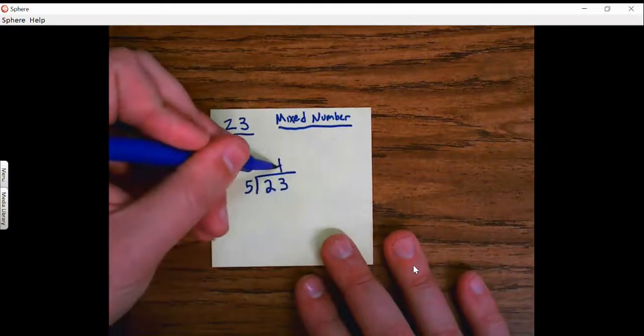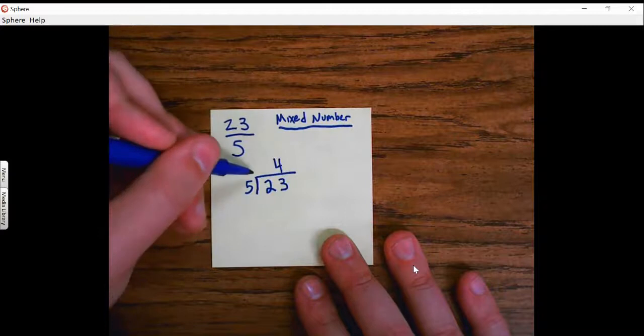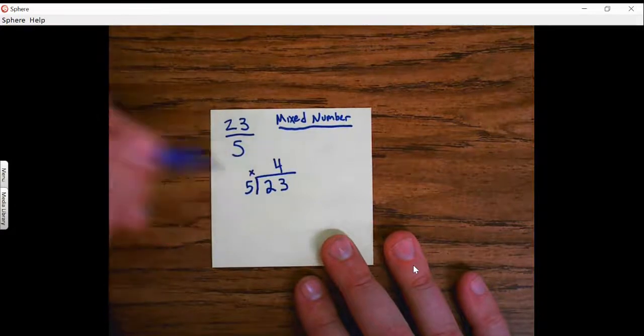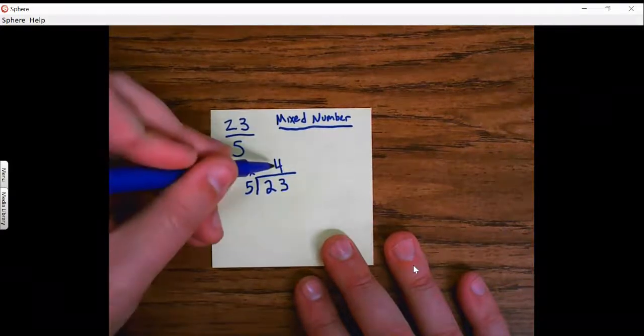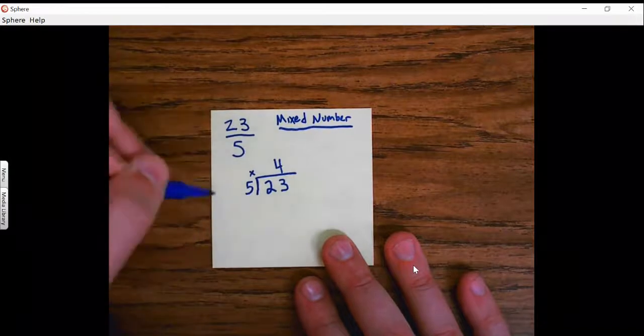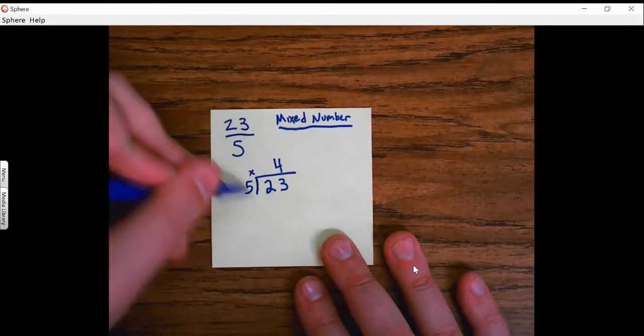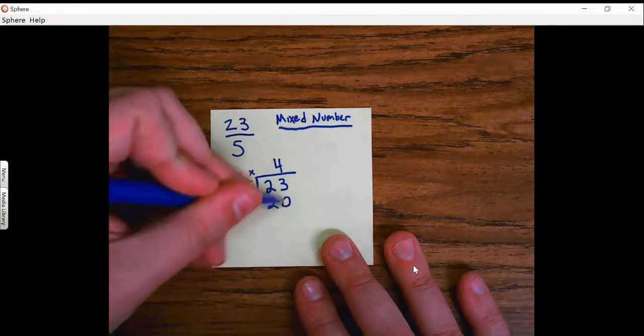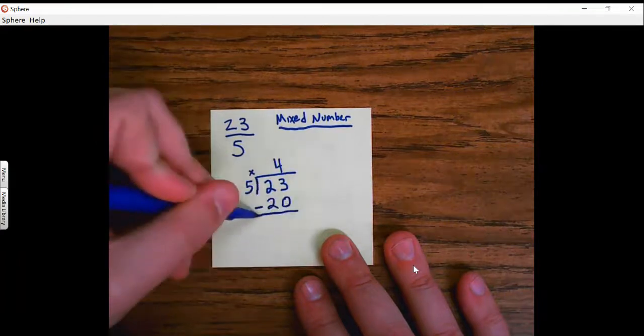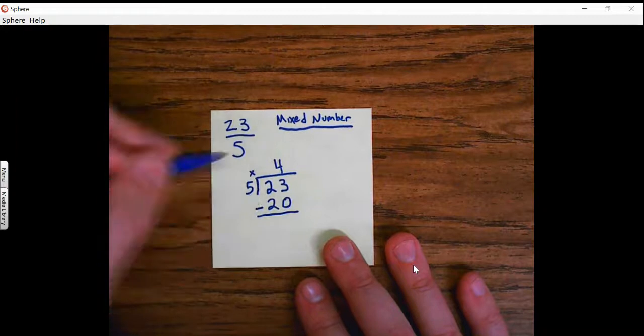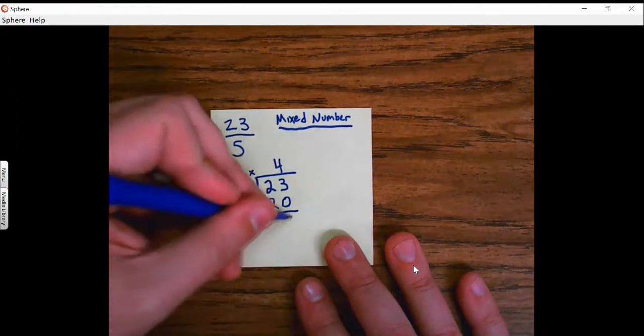So I'll go back to 4 groups of 5. And sometimes I put a little x right there to remind me, once I've gotten my number of groups, I multiply by 5. 4 times 5 gives me 20. And then I'll subtract 23 minus 20, gives me 3 left over.